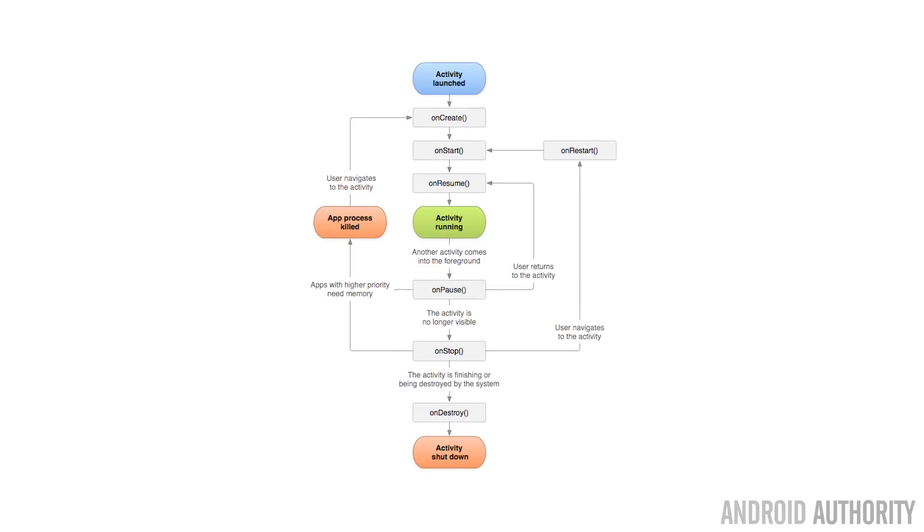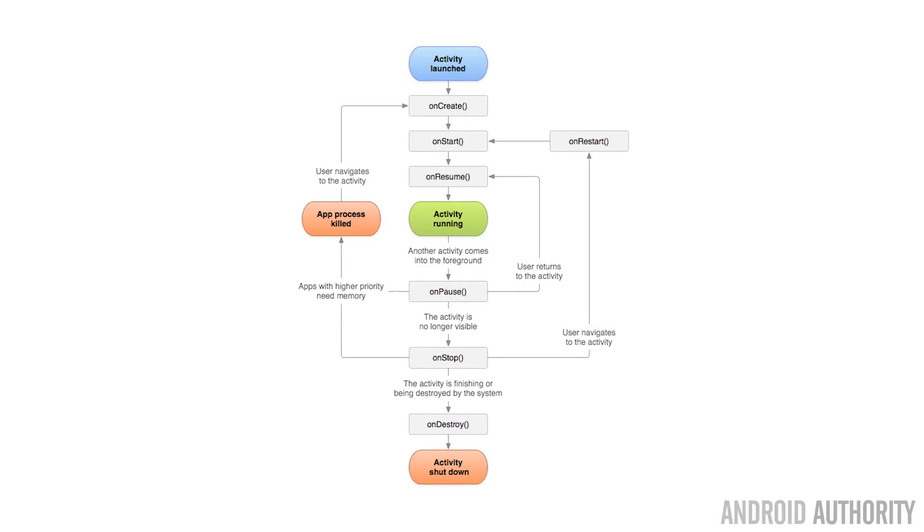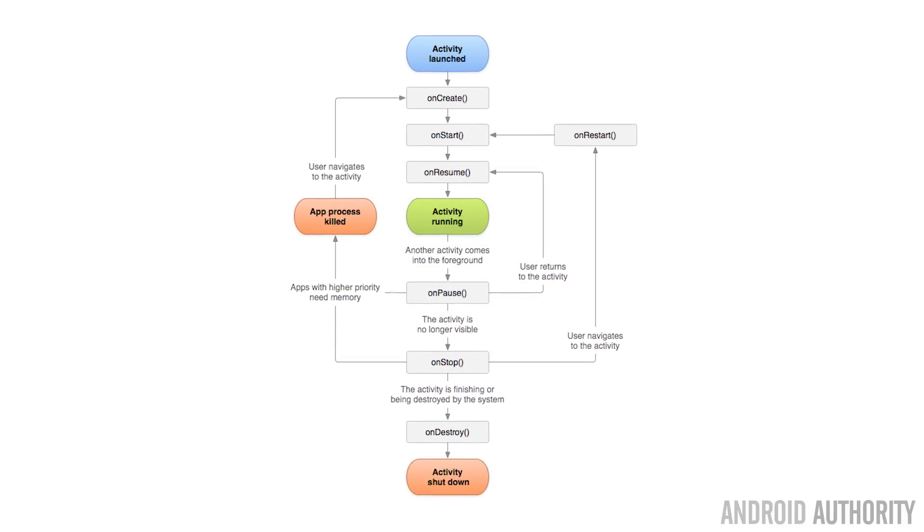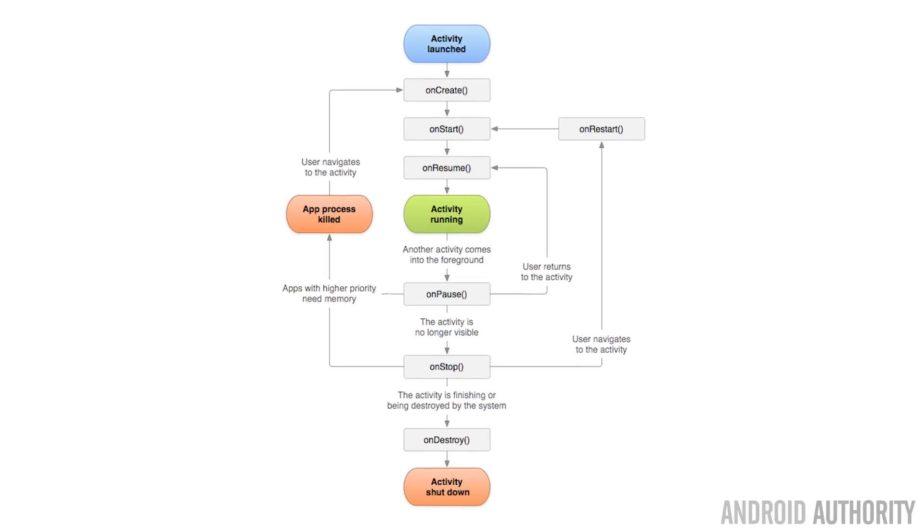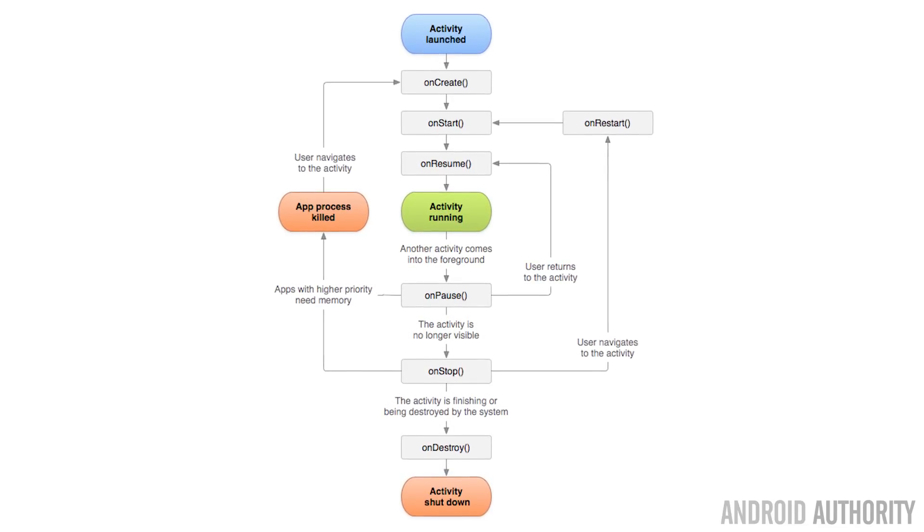When you start an application, it starts a Linux process and it can go through some different states. At the Linux level, it can go through running, runnable, and sleeping. When a process is actually on the CPU, it's running. When it's ready to run on the CPU, it's runnable. And when it's waiting for something to happen, like network traffic, it's known as sleeping. Android also has some different states for the activities which make up your app, and those include running, paused, and stopped.